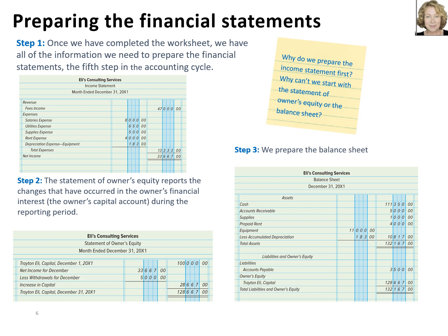Once we've completed the worksheet, we have the information to prepare the financial statements, which is the fifth step in the accounting cycle. As part of step one, we prepare the income statement by transferring the amounts from the worksheet to the income statement, first listing the revenue of $47,000 and then all of the expenses. We total all expenses and subtract that amount of $13,333 from the revenue to arrive at net income of $33,667.